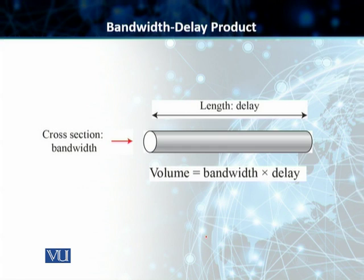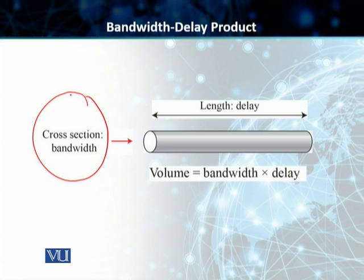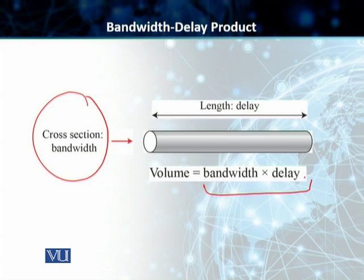Conceptually, how do we define it? We have a channel — in this case, the cross section of this channel or pipe represents our bandwidth. The length of that pipe — how long it is — represents our delay. The volume of this pipe, which is essentially equal to bandwidth multiplied by delay, or cross section multiplied by length, represents the bandwidth delay product: the measure of how many bits can fill that particular link at any point in time.